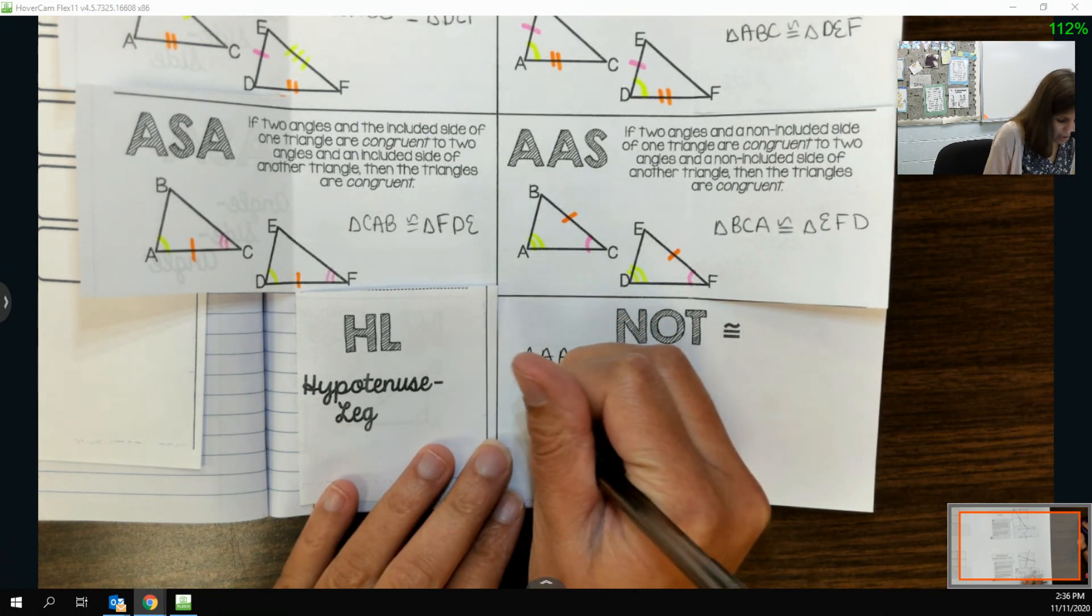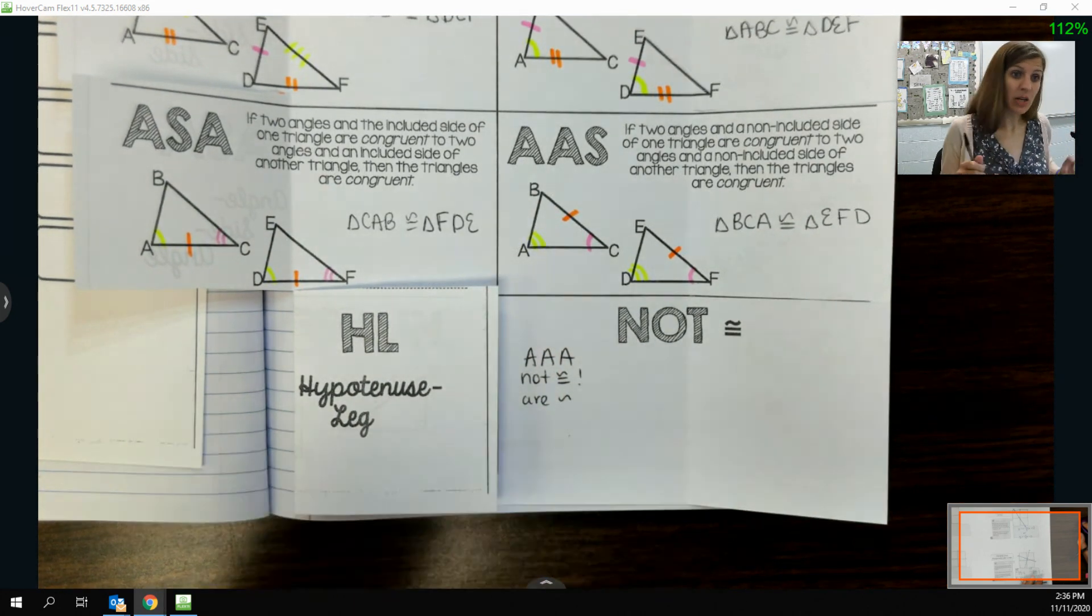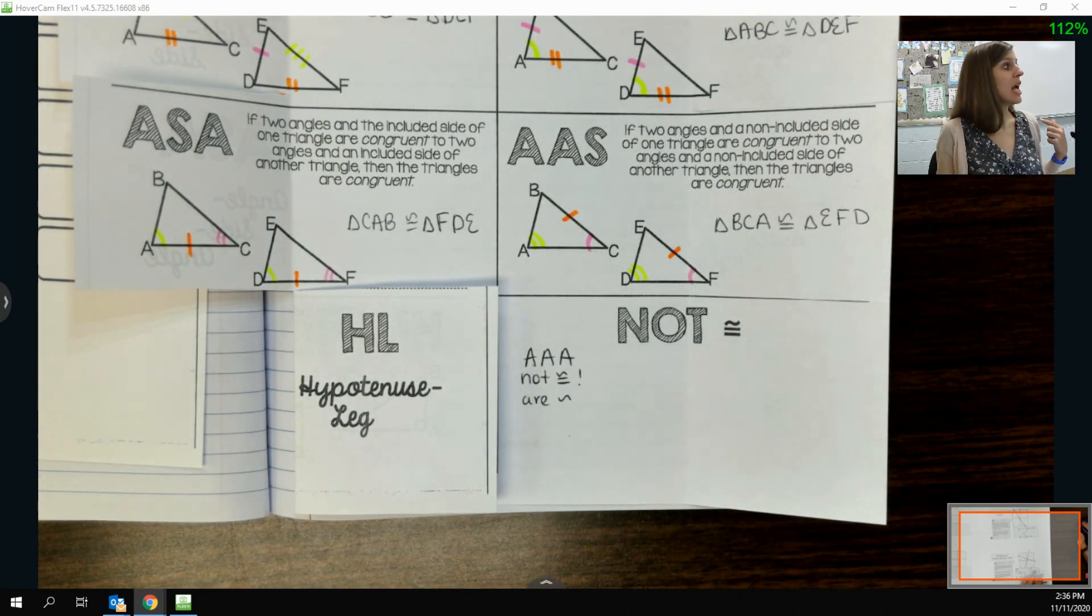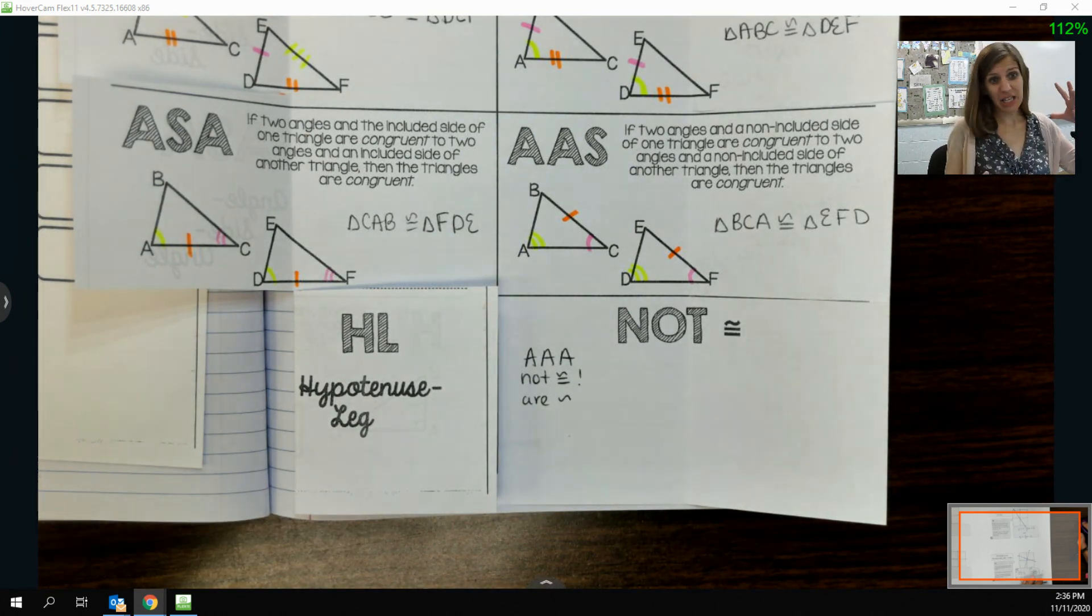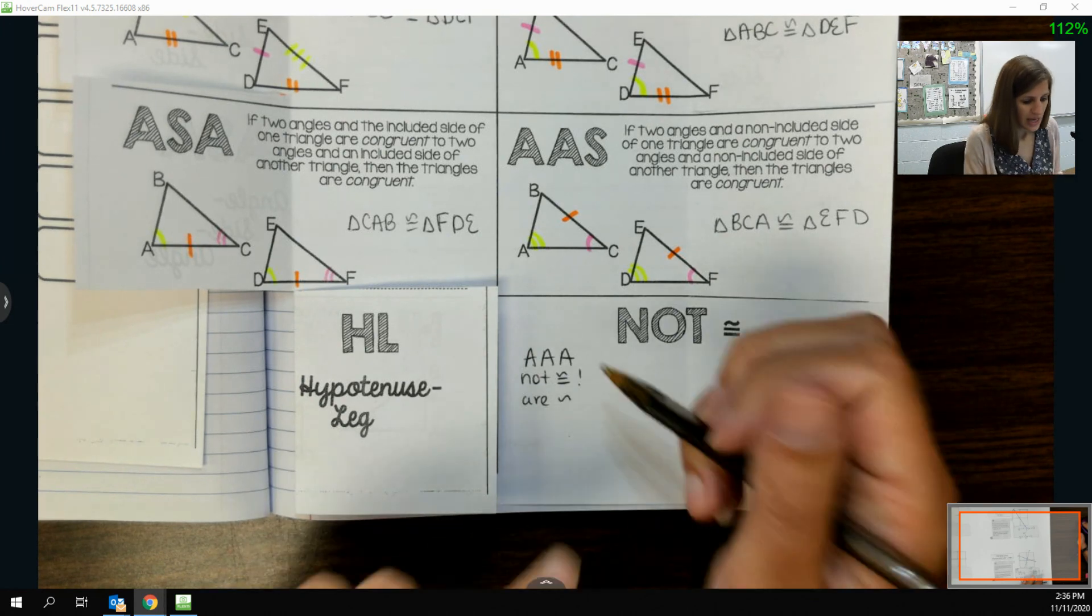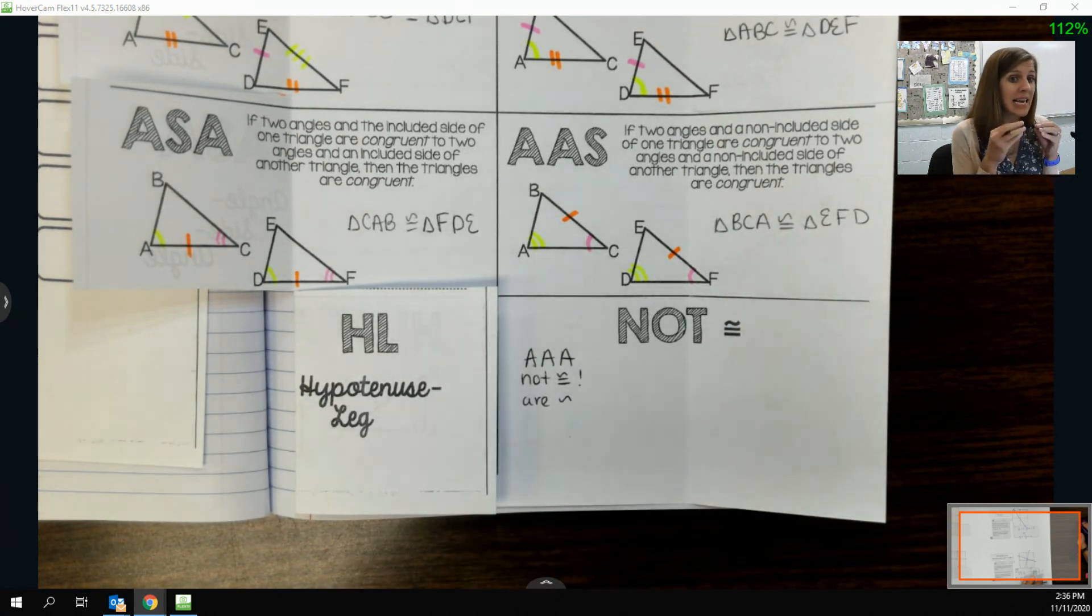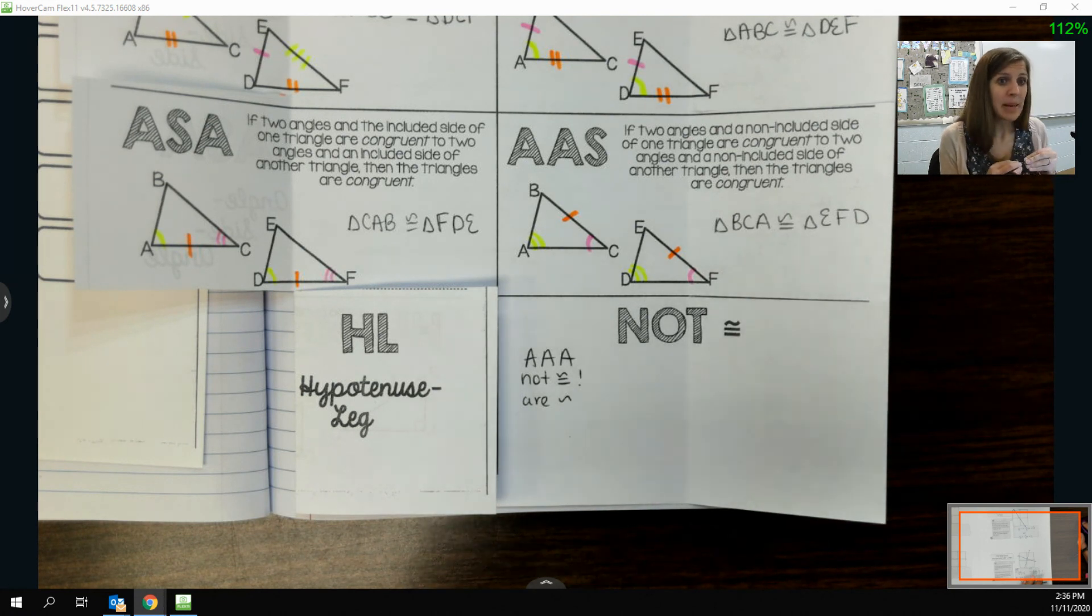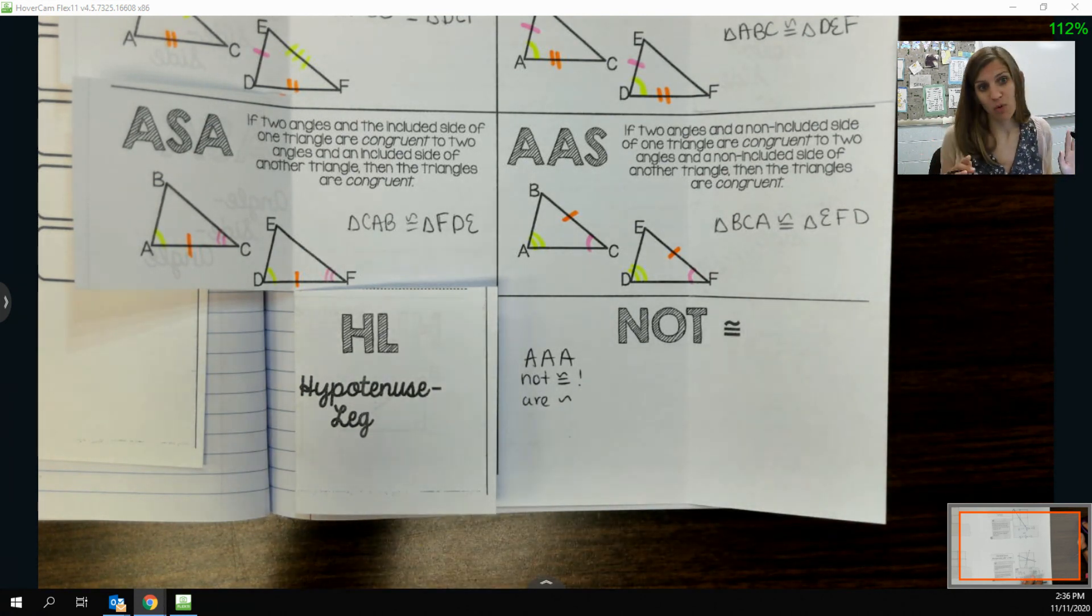However, they are similar, because when we talked about congruent versus similar, they're the same shape. One is just big, and the other is small, or vice versa. So angle, angle, angle is just not enough to know for sure that the triangles are going to be the exact same size. But they will be proportional, and we'll talk about that more later.